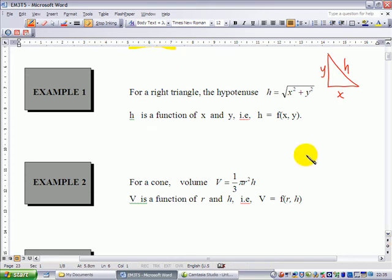Example 2: For a cone, the volume is V = (1/3)πr²h, where r is the radius of the base and h is the height. In this case, V depends on r and h.